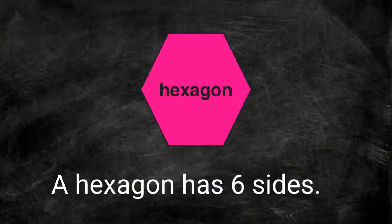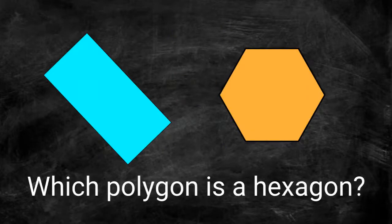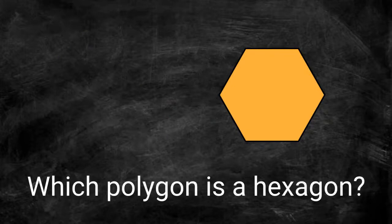The last polygon we are reviewing is a hexagon. A hexagon has six sides and six vertices. Which polygon is a hexagon? This is a hexagon because of its six sides.